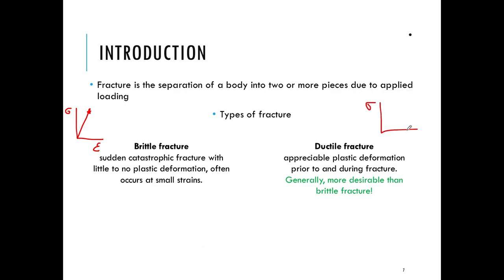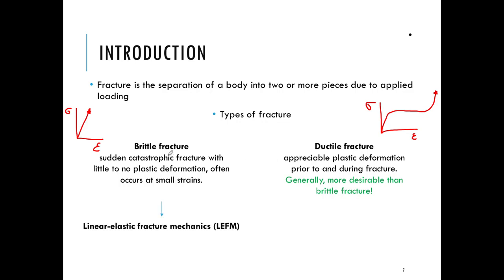In contrast, ductile materials tend to undergo fracture after having undergone significant amounts of plastic deformation. This is much more stable than brittle fracture and gives us a warning when the specimen might be about to fail, and thus is much more desirable. Brittle fracture is analyzed using linear elastic fracture mechanics, while for ductile fracture we need elastic-plastic fracture mechanics. In this course we will only deal with linear elastic fracture mechanics.